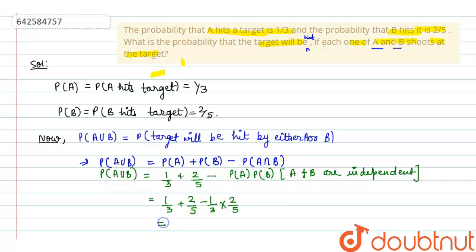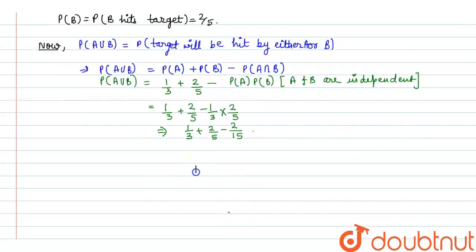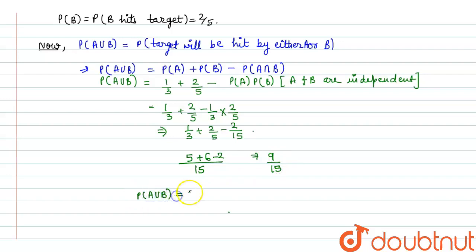Now by using the BODMAS rule we can solve it: 1/3 + 2/5 − 2/15. Taking the LCM, which will be 15: 5 + 6 − 2 = 11 − 2 = 9, giving us 9/15. Reducing this, we get P(A∪B) = 3/5. This is the required solution of the given question.